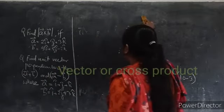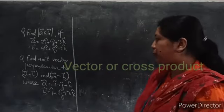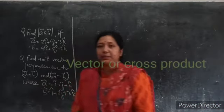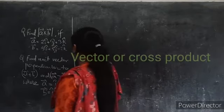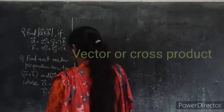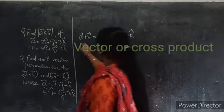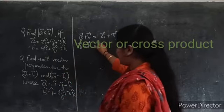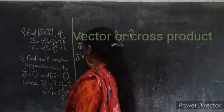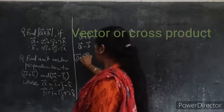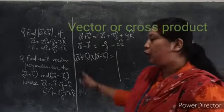Let us see the next question. Find the unit vector which is perpendicular to the vector A plus B and A minus B. We can take a vector C which is perpendicular to both A plus B and A minus B. What we have to do is first find A plus B, which is 2i cap plus 3j cap plus 4k cap, and A minus B, which gives minus 2k cap. After that, we use the cross product between A plus B and A minus B, and that result will be the vector C perpendicular to both given vectors.